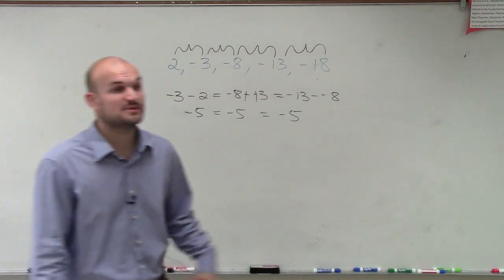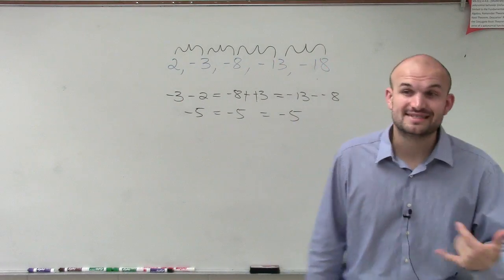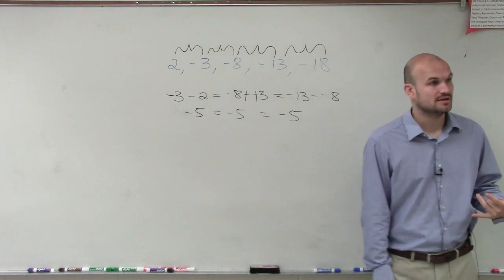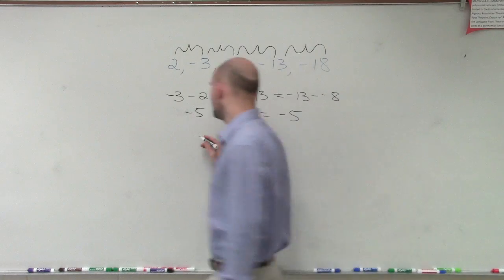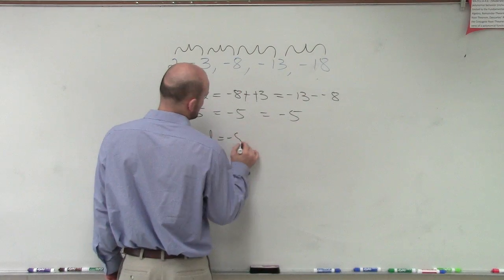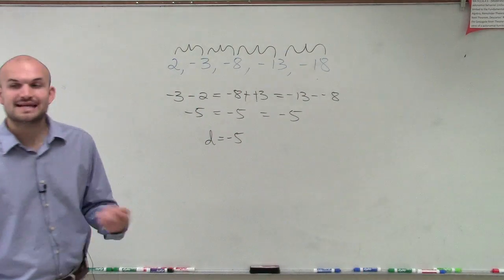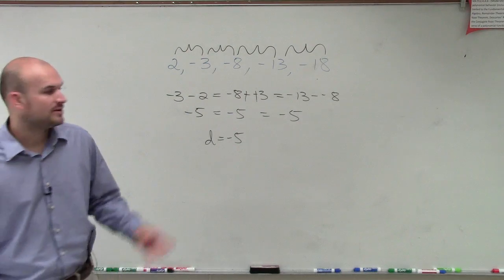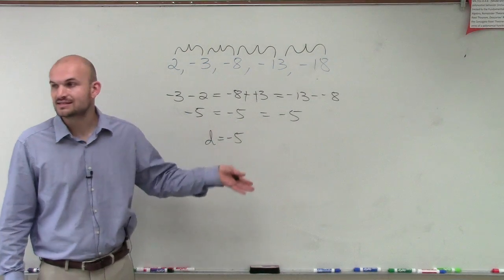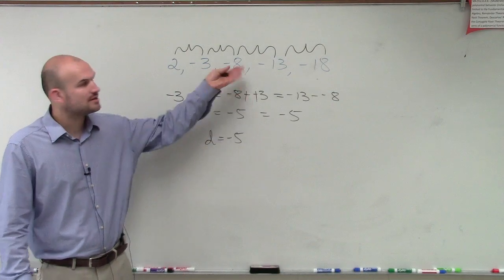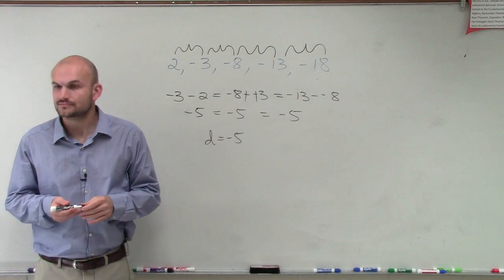So what you notice, ladies and gentlemen, is between each one of our terms, the difference between the values is negative 5. So therefore, we can say d equals negative 5. And since we now know that d equals negative 5, we know that since we have a difference that is constant between each one of our terms, we have an arithmetic sequence. That's it.